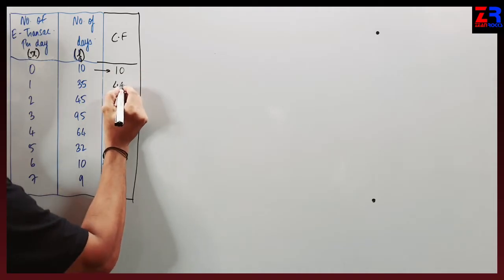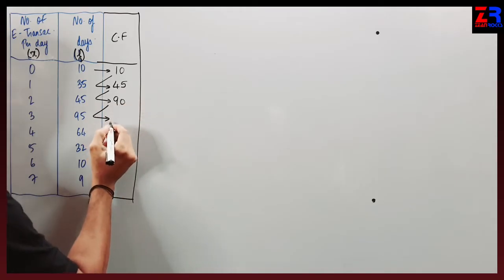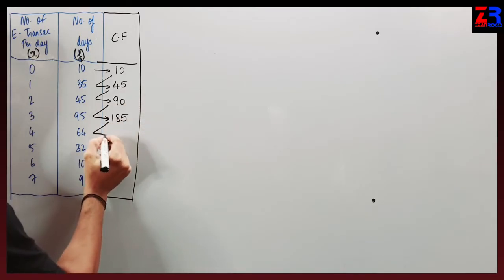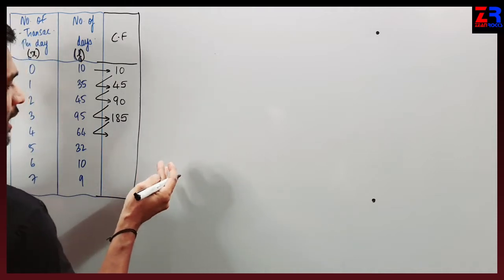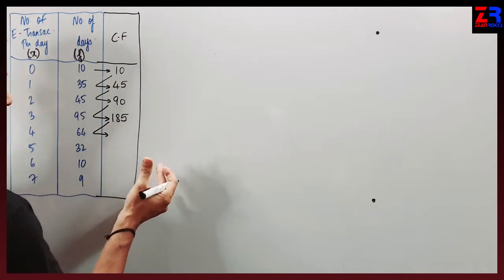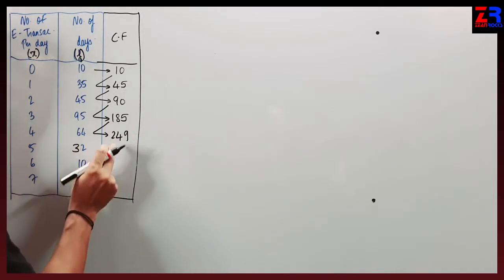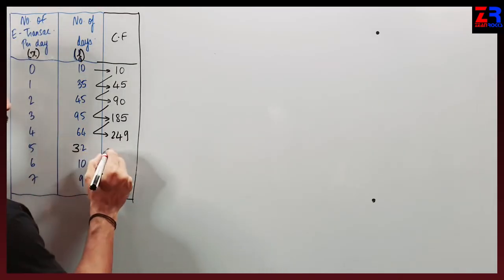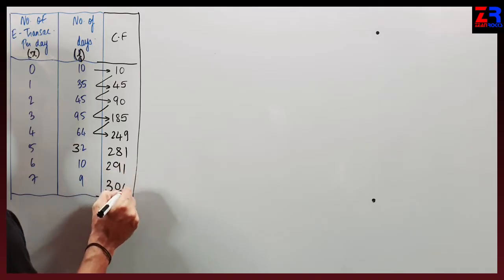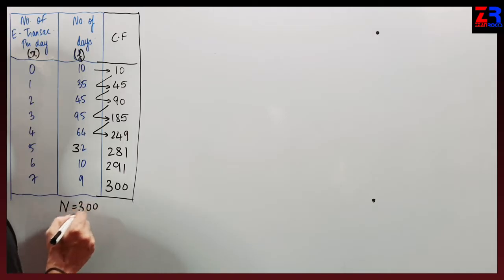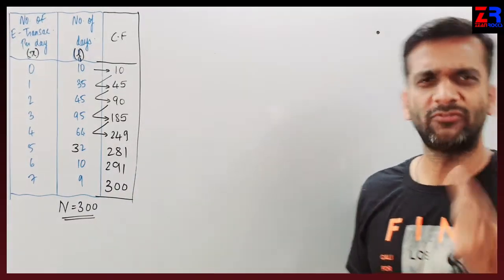First number remains the same: 10, then 10 plus 35 is 45, 45 plus 45 is 90, continuing to 185, 209, 229, 249, 281, and finally 300. So the value of N equals 300. Easy - prepare CF column, use the formula, get the answer.